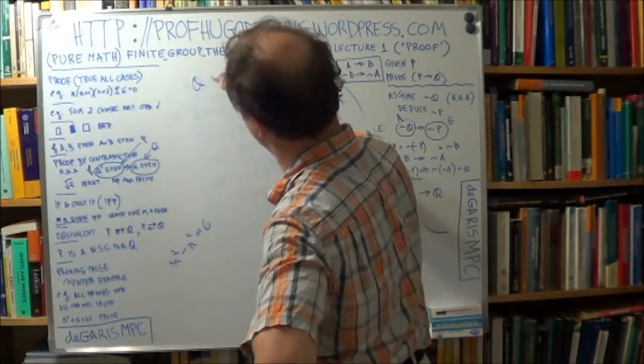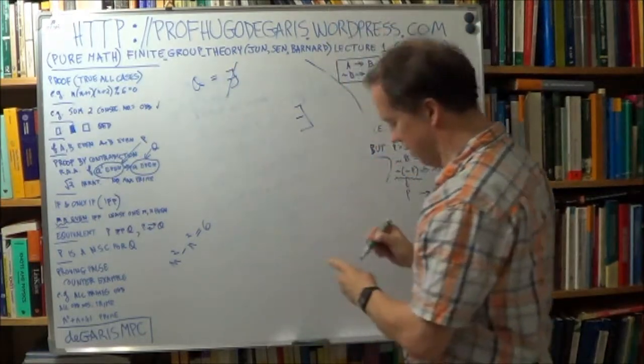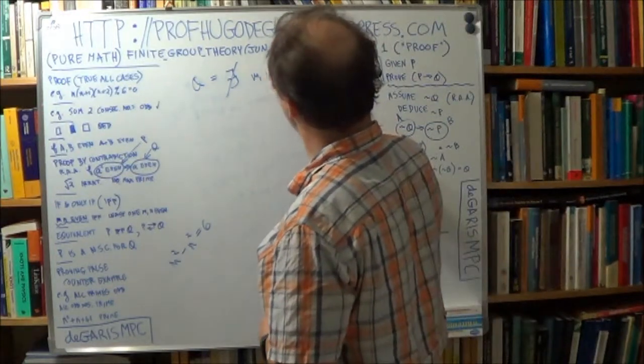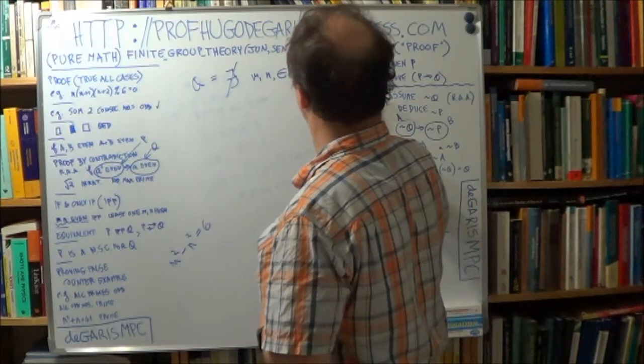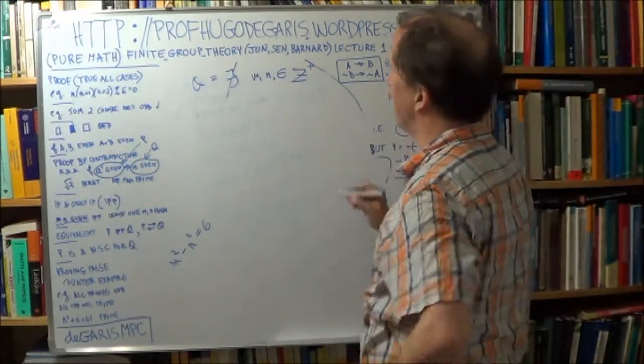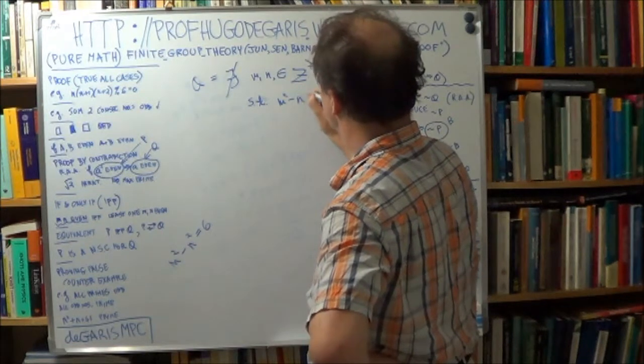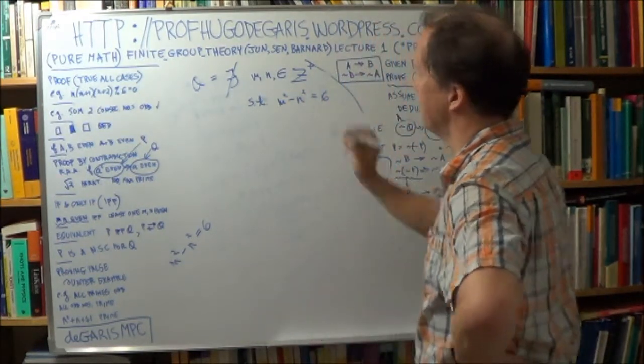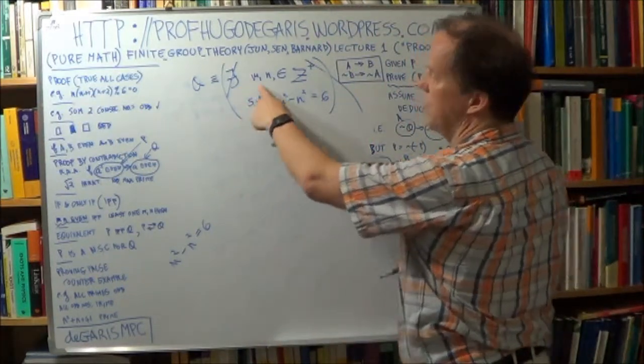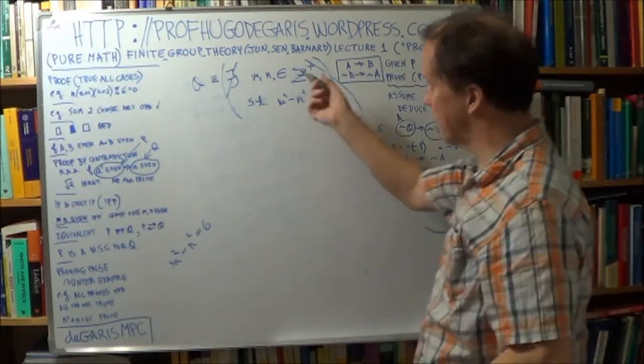So by contradiction, so Q, Q is there is no, there is no m, n belonging to Z plus (that's the set, the plus means the set of positive integers) such that m squared minus n squared is 6. That's the statement Q, that's the definition.